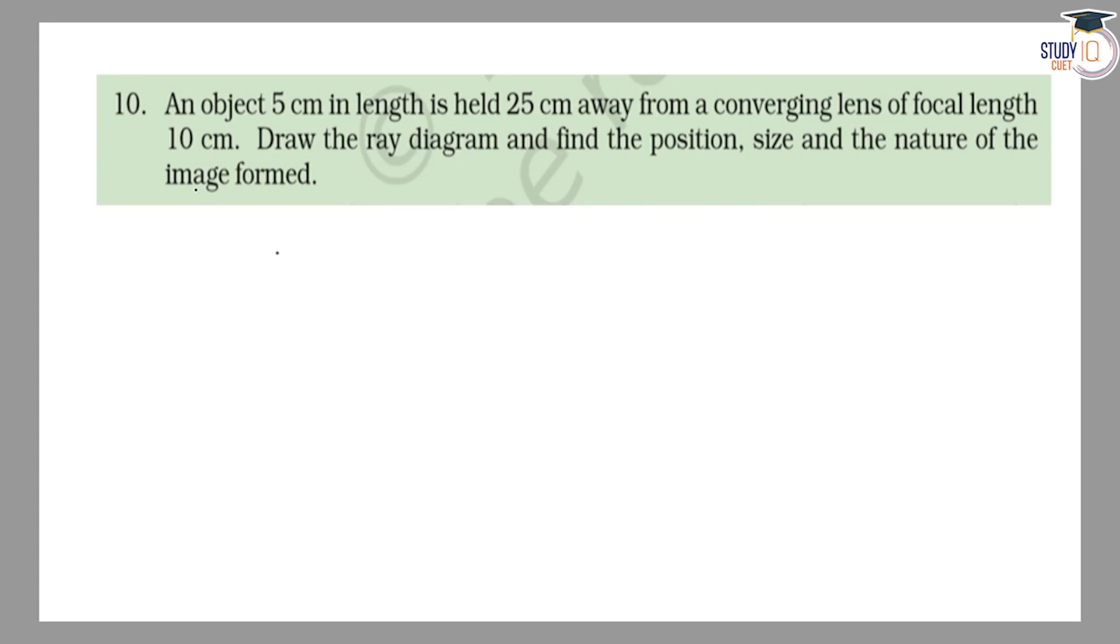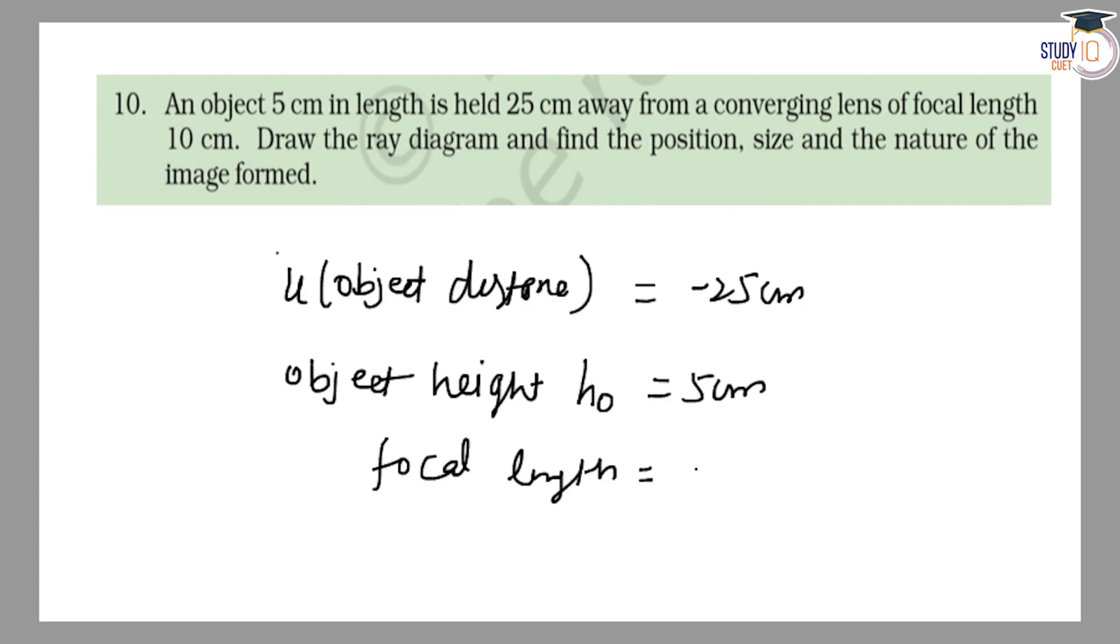First, the given values: object distance U is -25 cm, object height H₀ is 5 cm, and focal length F is +10 cm with a positive sign.